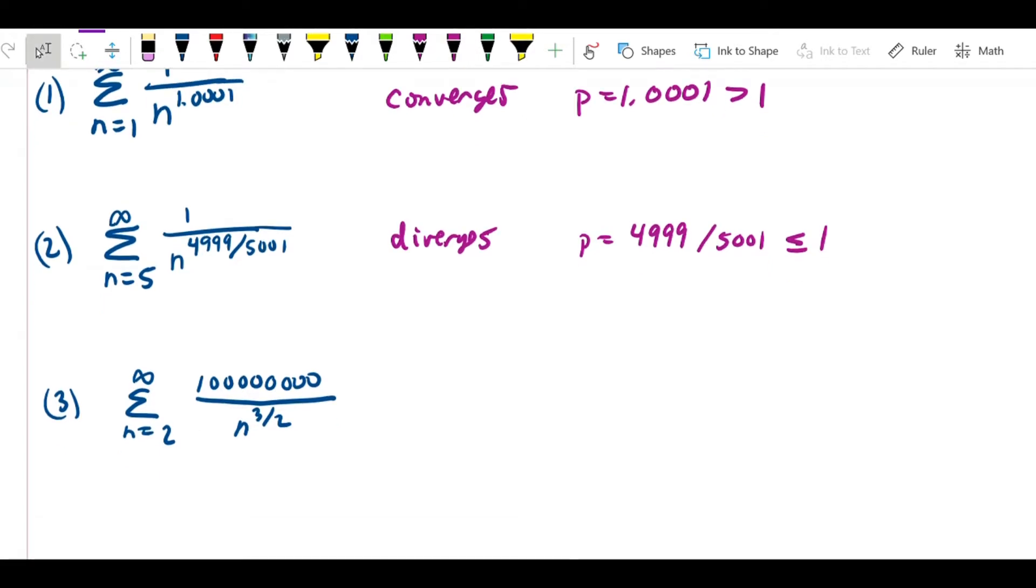In case 3, we can observe that this given series, since we put 100 million over n to the 3 halves, this is 100 million times the sum from n equals 2 to infinity of 1 over n to the 3 halves, and this is a convergent p-series because p is equal to 3 halves, which is greater than 1. So what we have is just 100 million times something that converges. In other words, 100 million times a finite number, and 100 million times a finite number is still a finite number.